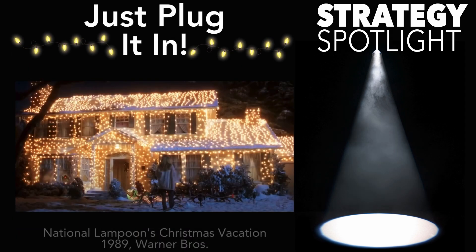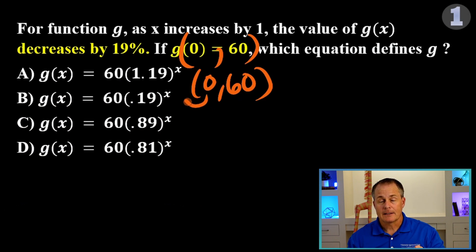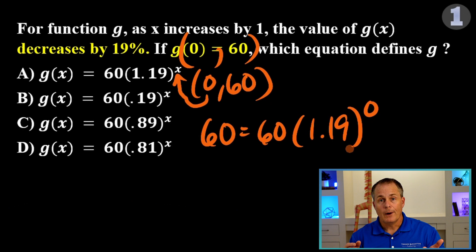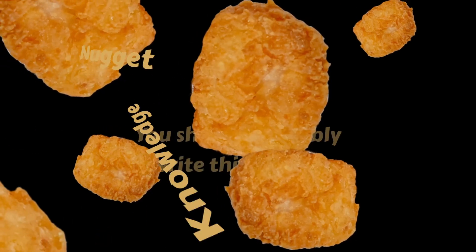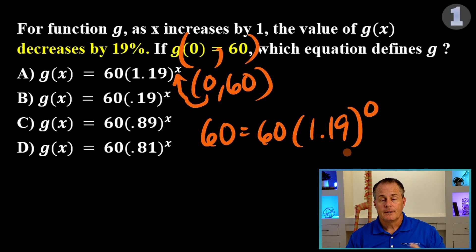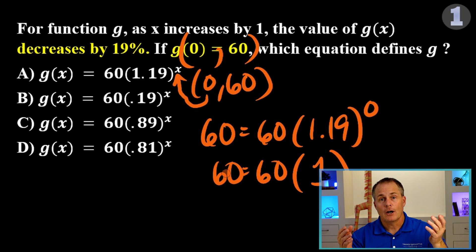Plug in 0 for x and 60 for g(x), and let's see which equation defines g. Using the first equation, when 0 goes in for x, we get 1.19 to the 0 power. Do you know what anything to the 0 power is? You should probably write this down. Anything to the 0 power is 1. So, 1.19 to the 0 power turns into 1, and we see that the two sides are equal.